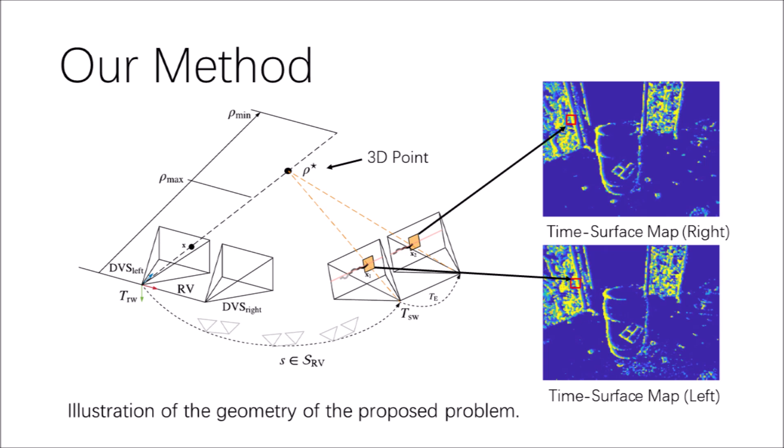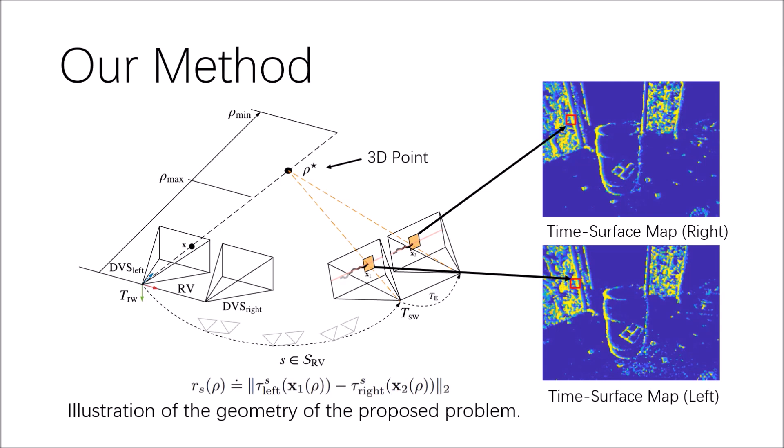This property enables us to apply an idea similar to DTAM, simply by replacing the photometric consistency with stereo-temporal consistency.